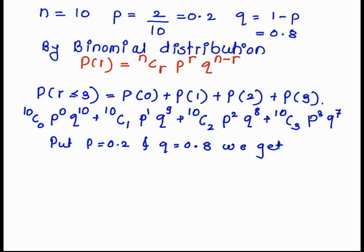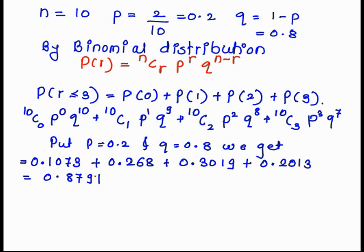Put the value p equal to 0.2, q equal to 0.8, so we get 0.1073 is the value for probability of 0, probability of 1 is 0.268, probability of 2 is 0.3019, and probability of 3 is 0.2013. So the total probability is 0.8791.